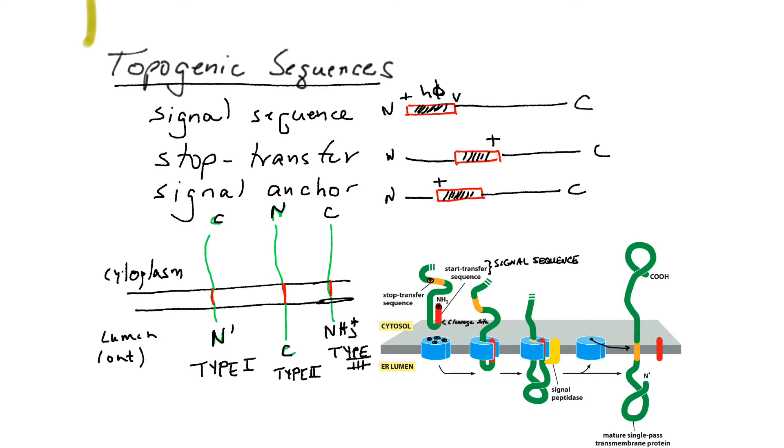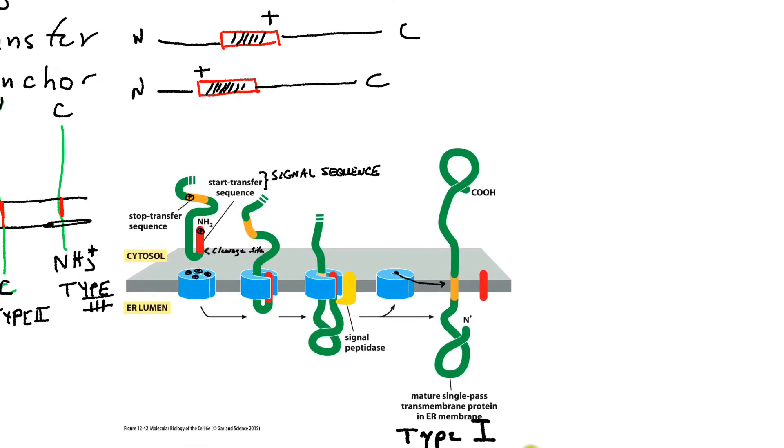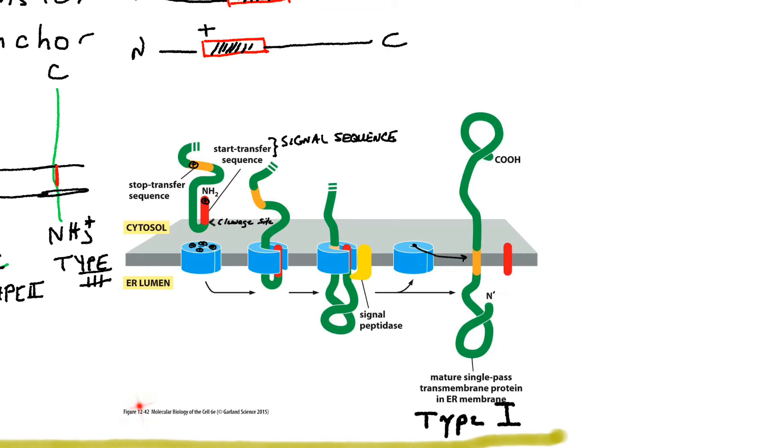Because Type 1s use a mechanism that begins right where we ended it off, with the cleavage of the signal sequence by signal peptidase, and the continuation of co-translational translocation, we'll cover it first, and then we'll talk about how that mechanism differs in the synthesis of the so-called Type 2 and Type 3 transmembrane proteins. The first one off the bat will be Type 1, and that process is shown in this figure from your text 1242.